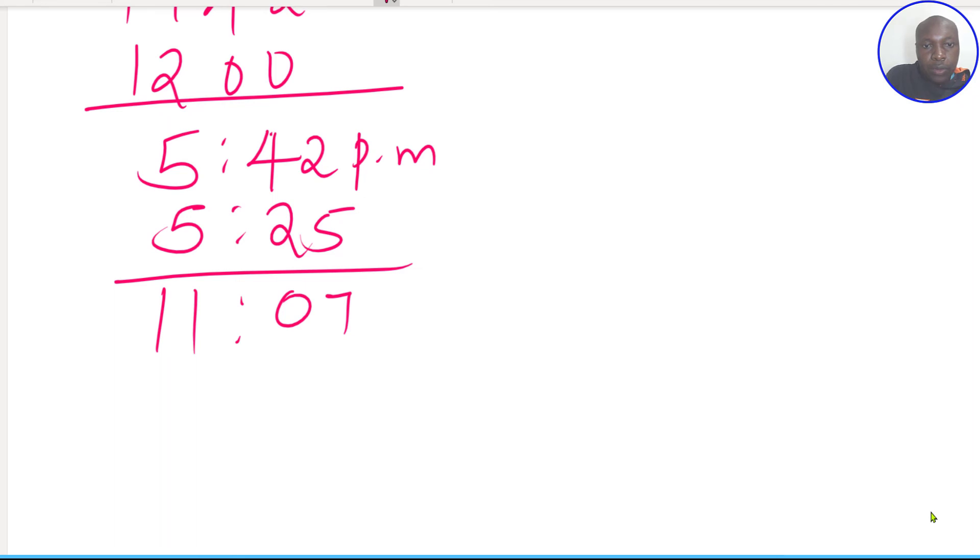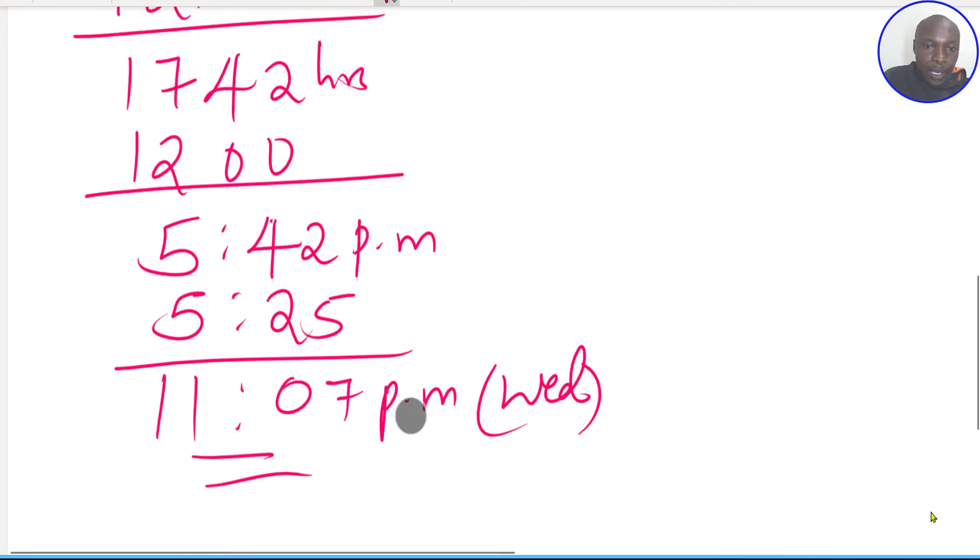So this will be 11:07. From 5:42 pm, this one will give 11:07 pm. And this will be on Wednesday, 11:07 pm. So that is how you're supposed to solve that question.